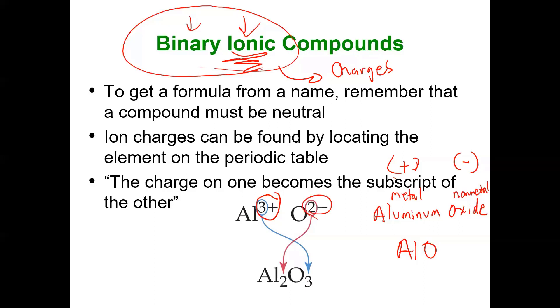So how do I get the right ratio? Crisscross, applesauce. You can think of it as what is the least common multiple of three and two. It's six. So if I have two aluminum, three pluses, the two of them are contributing to a six plus charge. Just like if I have three oxygens or oxides, the three of these are contributing to a six minus. And six minus six gives me a neutral compound, which is this ionic compound.